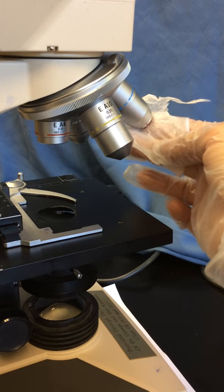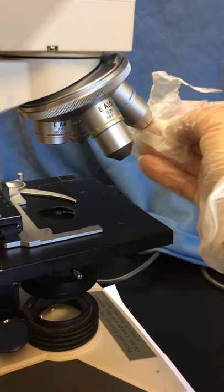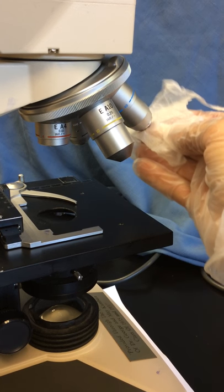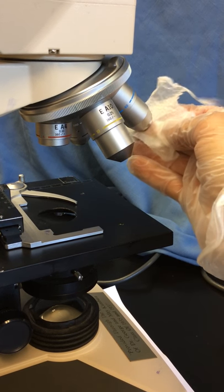Many of the microscopes, you'll notice that the high dry lens appears cloudy, and that's because by accident, immersion oil has dried on the lens and now the image is very cloudy.